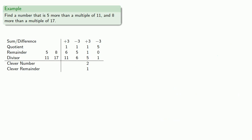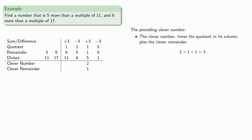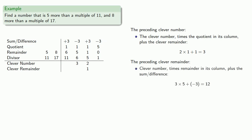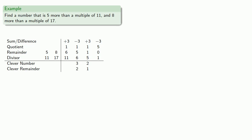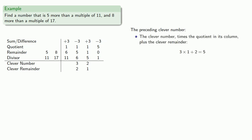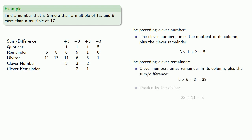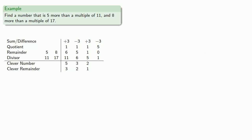Once we have our starting point, we can roll backwards: the preceding clever number is clever number times quotient plus clever remainder; the preceding clever remainder is clever number times remainder plus the sum or difference, then divided by the divisor. Since this is the last column, we find our solution: our clever number times our divisor 17, plus our remainder 8. That's 8 more than a multiple of 17, and 5 more than a multiple of 11.